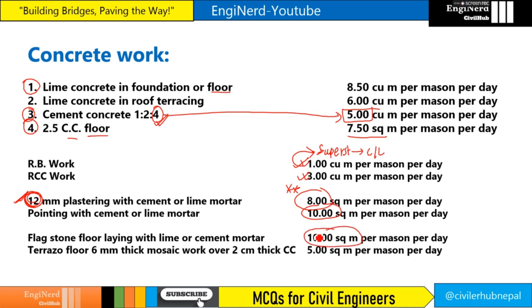For 6 mm thick mosaic work over 2 cm thick cement concrete, the outturn is 5 square meter per mason per day.